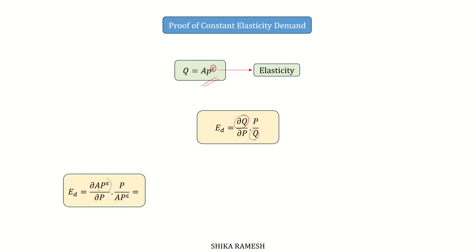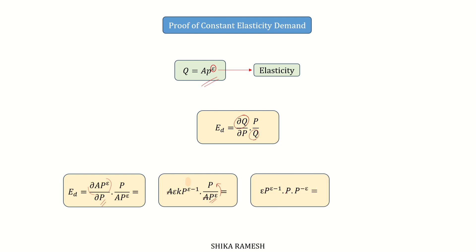Differentiating the term with respect to p, we get the equation as such. Here, a and a will get cancelled out. Bringing p^ε onto the numerator, we can write it as ε · p^(ε−1) · p · p^(−ε). Since this p represents p^1, we can rewrite it as ε · p^(ε−1) · p^(1−ε). Here, p^(ε−1) and p^(1−ε) will get cancelled out, and finally we get the answer as ε, which is nothing but the elasticity of demand.